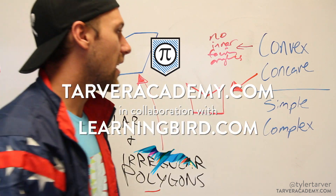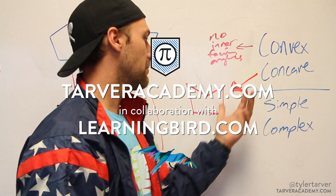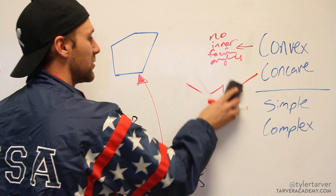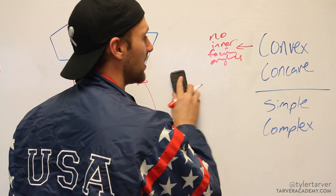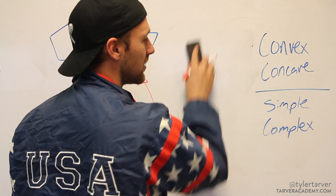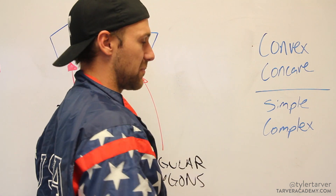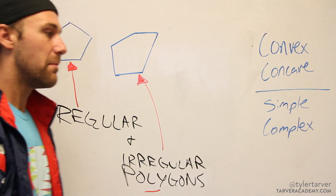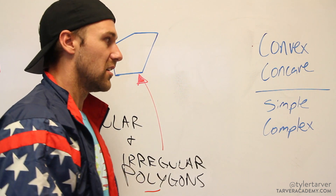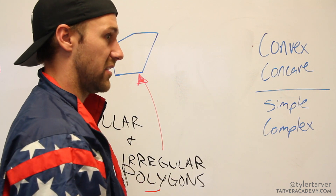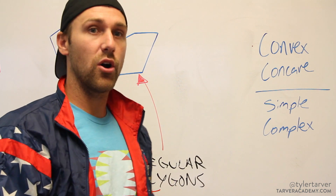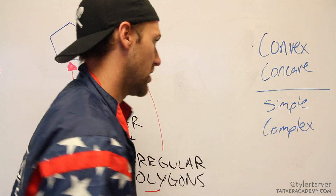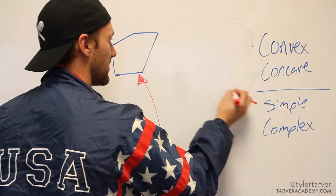Now the next comparison of polygons we want to look at are simple polygons and complex polygons. A simple polygon means that there are no sides that overlap each other.